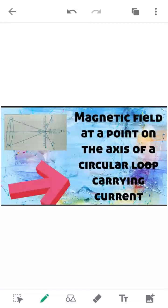Welcome back students. Today's topic is magnetic field at a point on the axis of a circular loop carrying current. In the last class we have seen the Biot-Savart's law where we have seen a linear wire, and here the same thing — the wire is wound in a loop.